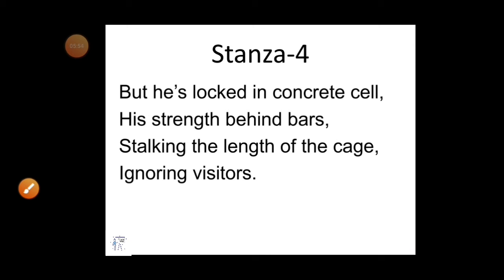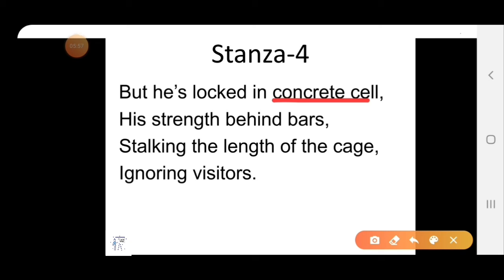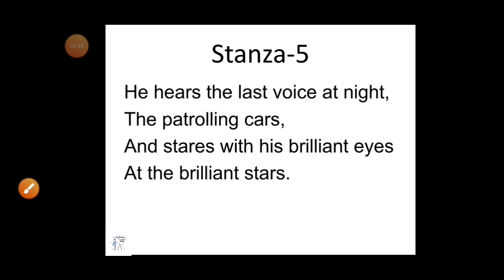Stanza 4: 'But he is locked in a concrete cell, his strength behind bars, stalking the length of the cage, ignoring visitors.' Concrete means a building material made from gravel, sand, cement, etc. Cell means a small room. In this stanza, the tiger is locked in a strong, solid concrete cell of the zoo. His strength is strained behind the bars of the cell, but he is walking there in a proud and stiff manner, without taking notice of the visitors — the human beings.